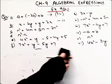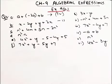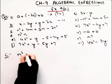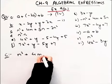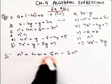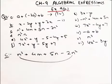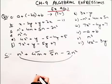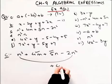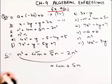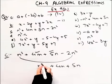Now coming to the C part. C is: n² + 4m + 5n – 2n². We simplify like terms with like terms. The unlike terms — 4m and 5n — I'll write them as they are: plus 4m plus 5n.